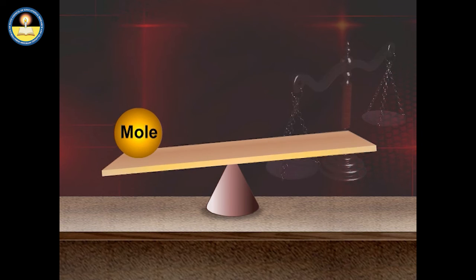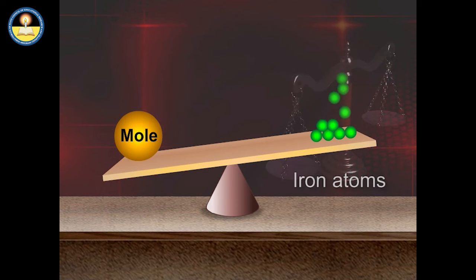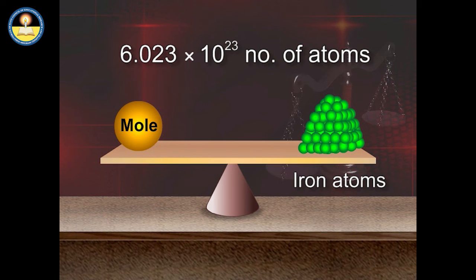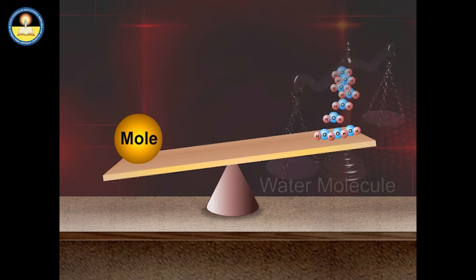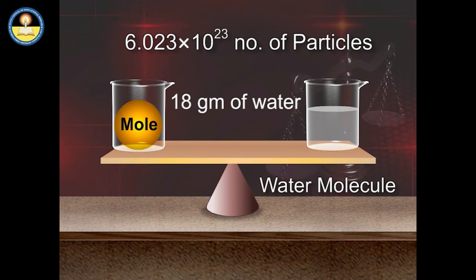Using a beam balance: 1 mole of iron atoms contains 6.023 × 10²³ atoms, which equals 56 grams of iron. 1 mole of water molecules contains 6.023 × 10²³ water molecules, which equals 18 grams of water.